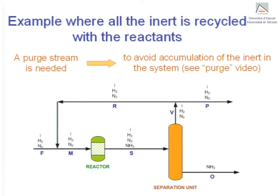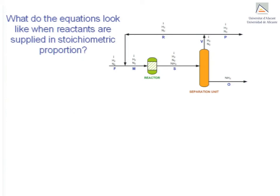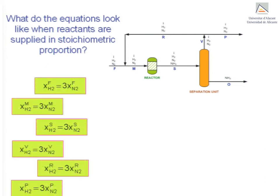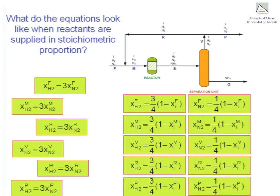Let's use equations to see what reactants fed in stoichiometric proportion means in this situation. The molar fraction of hydrogen is three times that of nitrogen in streams F, M, S, V, R and P. Furthermore, it would be easy to determine the molar fractions of hydrogen and nitrogen in streams F, M, R, V and P, provided that the molar fraction of the inert in those streams is known beforehand.